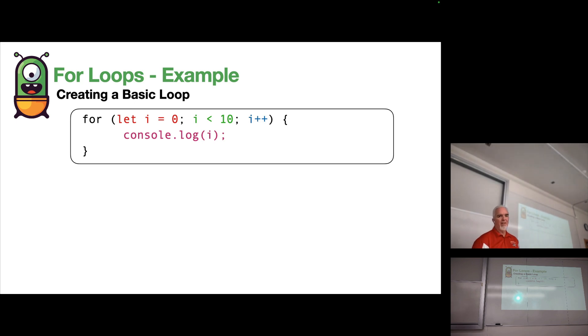In the initialization, we have let i equals 0, so we're setting the variable i equal to 0. The condition is checking to see if i is less than 10. In this case, it starts out as 0, so it's less than 10 to begin with.